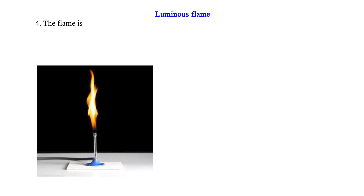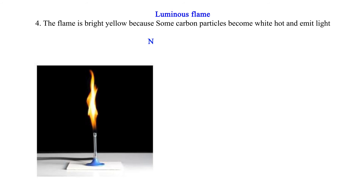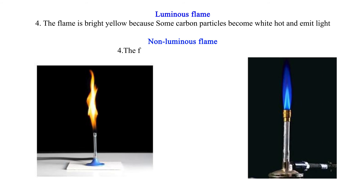Characteristic four: A luminous flame is bright yellow because some carbon particles become white hot and emit light. A non-luminous flame is blue. Note: the non-luminous flame is the hottest flame.